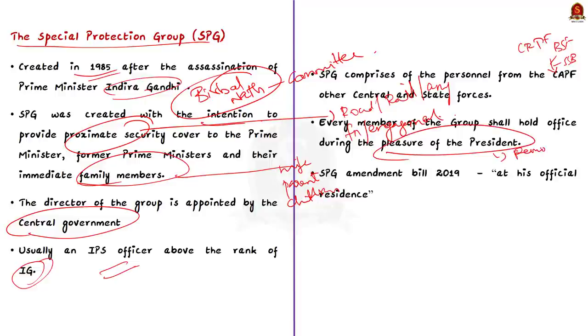See the SPG amendment bill which was introduced in 2019 reduced the SPG coverage stating that the protection now will be offered only to the PM, former PMs and the immediate family members who reside with him at his official residence. That means if they are outside the official residence no protection will be given. That's all regarding this article.